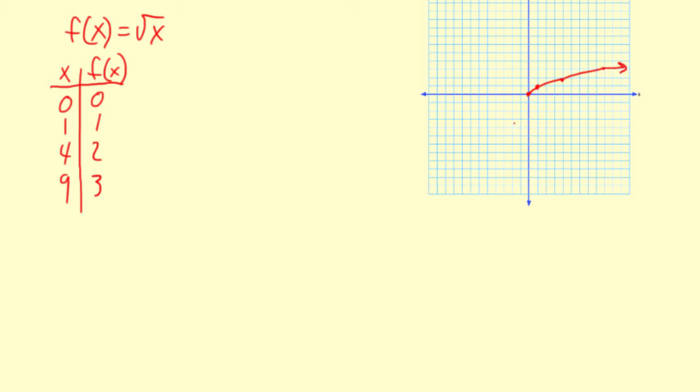Okay, so something like that. And the graph does increase at a decreasing rate, so my next perfect square is 16 and that would be 4. So the graph does continue to increase but not as quickly.